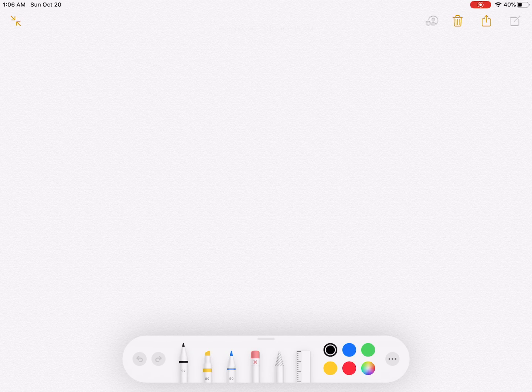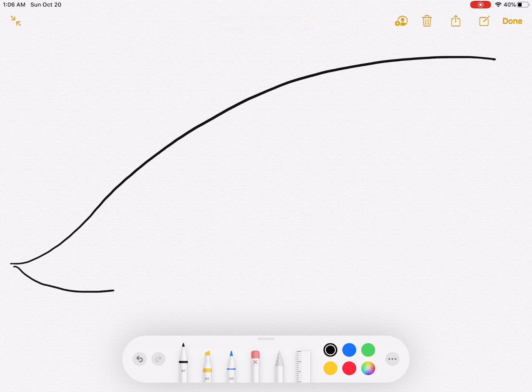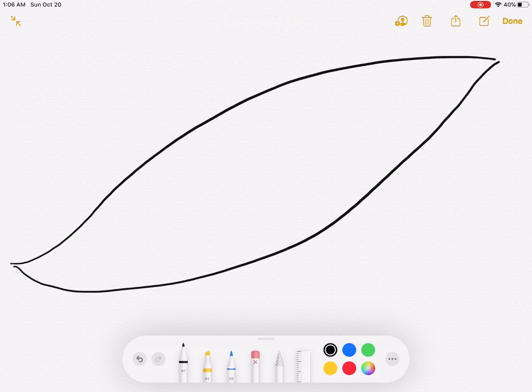So what you should have drawn on your table is first a leaf. This should take up the majority of your table. Draw it nice and large because we're going to be drawing some things inside.